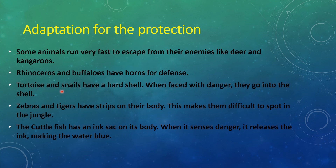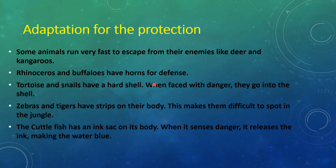Next we will learn about adaptation for protection. Animals defend themselves from their enemies. Some animals like deer and kangaroos run very fast to escape. Rhinoceros and buffaloes have horns for defense. Tortoise and snail have a hard shell — when they face danger, they go into the shell. Zebras and tigers have stripes on their body, making it difficult to spot them in the jungle. The cuttlefish has an ink sack on its body. When it senses danger, it releases ink, confusing the enemy and turning the water dark.